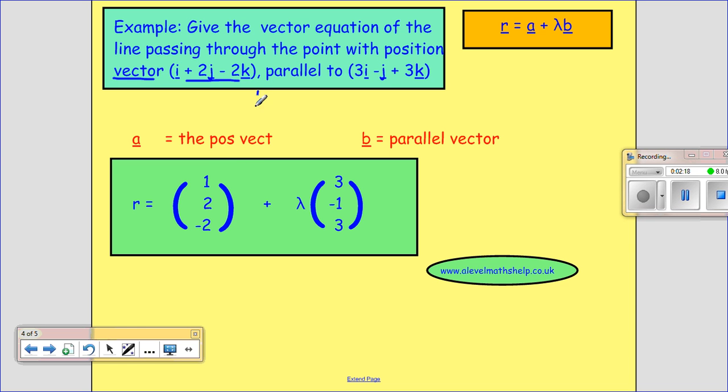And I'm just going to write it in column form notation. So if you remember what we have, we have I, J, K, so the component of I is 1, component of J is 2, and component of K is minus 2. So that goes in here, and then it's lambda some scalar times the vector parallel to my line, so that when you put it in column form notation is 3 minus 1, 3. And this is it. This is all you have to do to give the vector equation of a line.